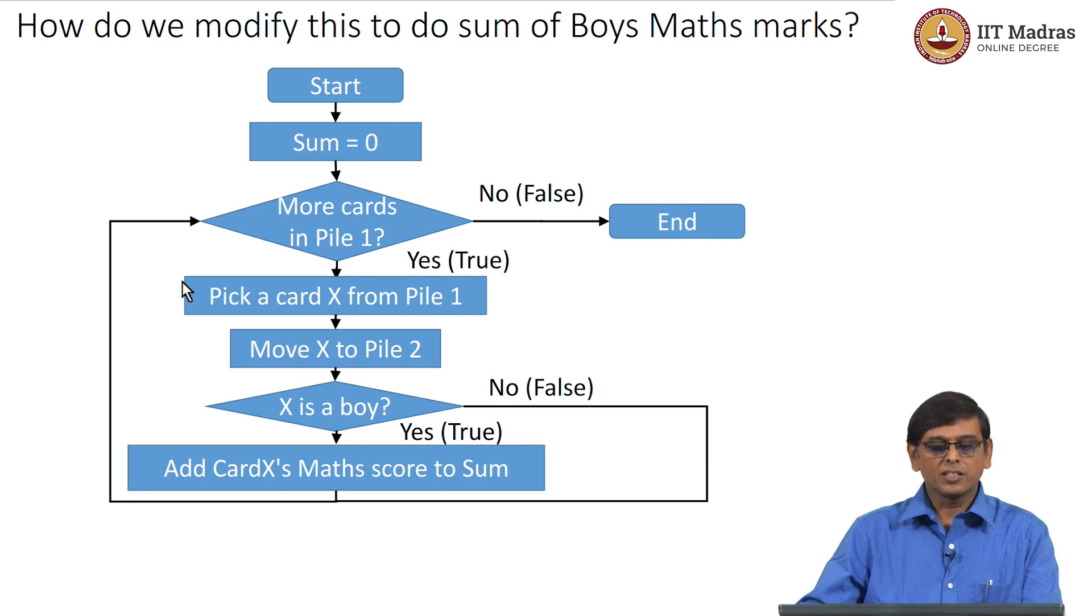The arrow goes all the way back like this to this decision box. So basically you are just skipping this adding math to sum and going back to the beginning of the iteration, which if you remember, is checking whether there are any more cards in pile 1. Essentially the condition check here for filtering is whether X is a boy - there are two possibilities. One is X is indeed a boy, which means the condition comes out true, in which case you will add the math marks to sum. Or it could come out false, in which case you do nothing, and the way to represent nothing is you bypass this box - that is, go around this box and go back to the start of the iteration.